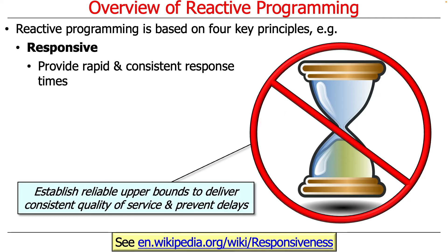The first principle is responsiveness. You want your program — your microservice or whatever — to provide rapid and consistent response times. Ideally, you'd like reliable upper bounds on the time taken to deliver and process material, giving you more consistent quality of service and preventing undue delay. Users today expect responses right away when they do anything on the web — nobody wants to sit there watching a spinning wheel telling them things are taking too long.